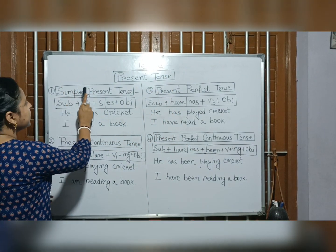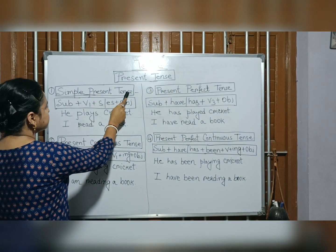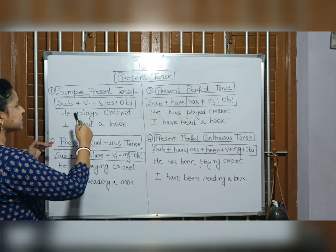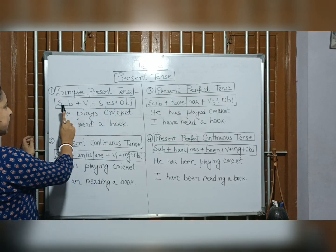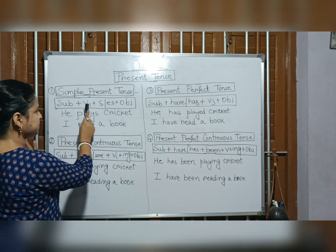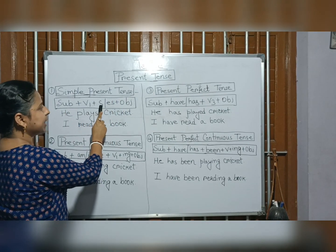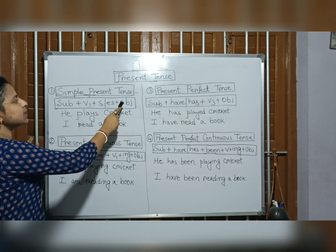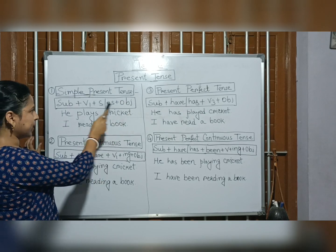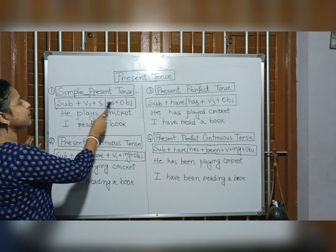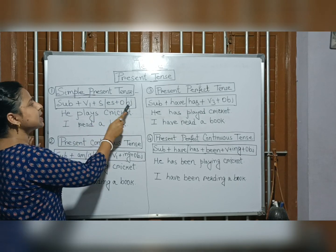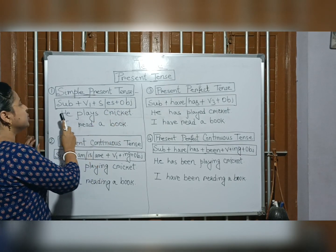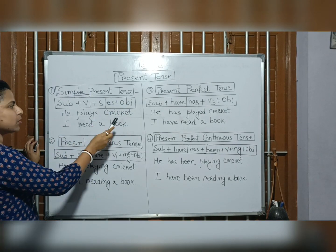First, simple present tense and its structure: Subject plus V1 (is/are) plus object. This is the simple present tense form.